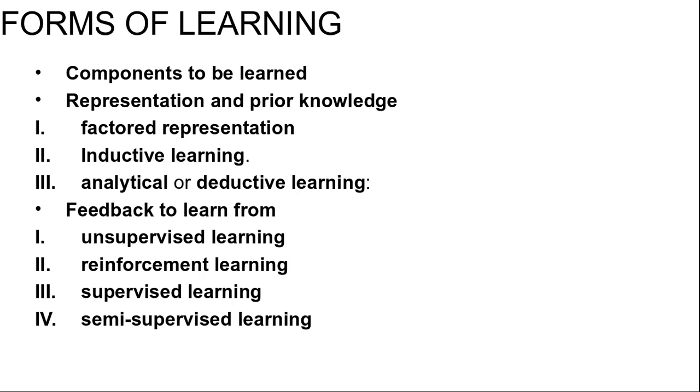Next is feedback to learn from. There are three types of feedback that determine the type of learning. First, unsupervised learning: the agent learns patterns in the input even though no explicit feedback is supplied. The most common unsupervised learning task is clustering, detecting potentially useful clusters of input examples. For example, a taxi agent might develop categories of good traffic days and bad traffic days without being given labeled examples by a teacher.